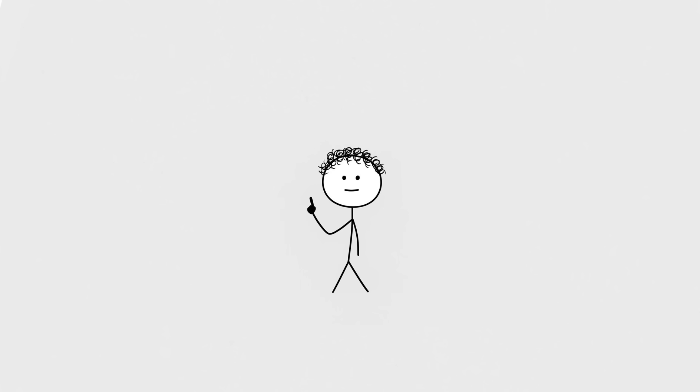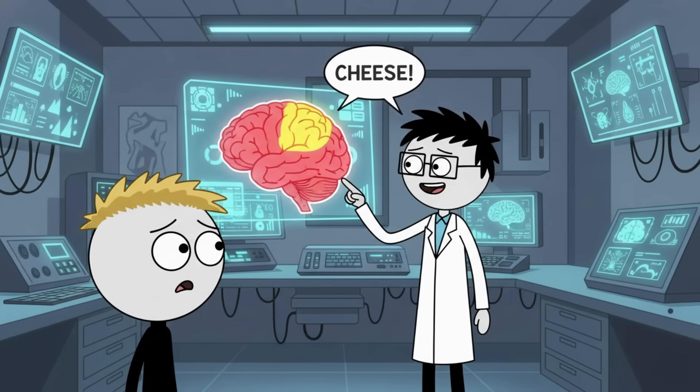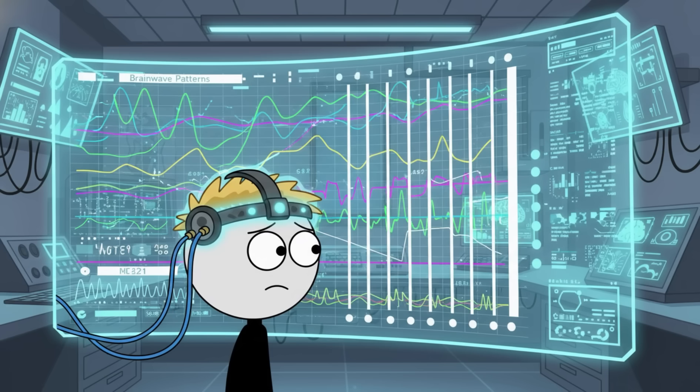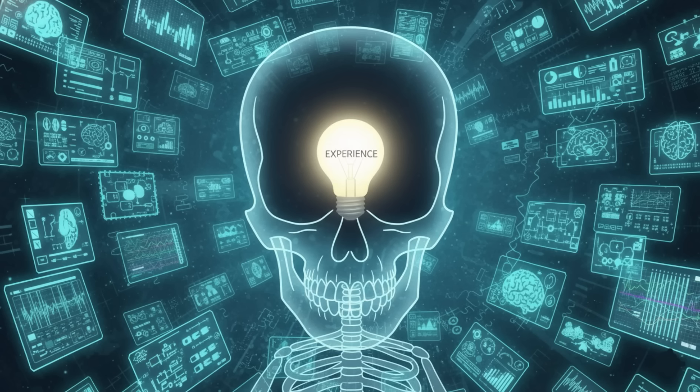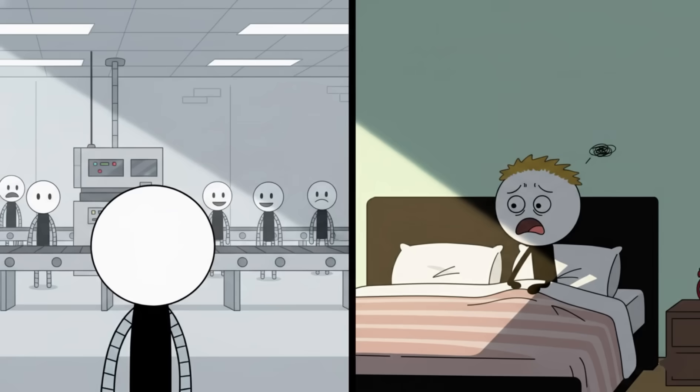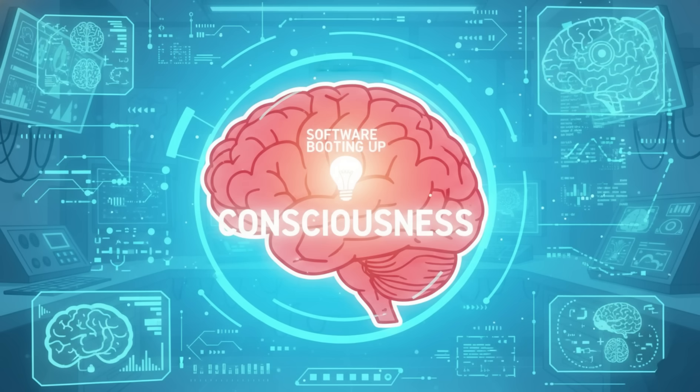Neuroscientists can point at brain regions and say look, this lights up when you think about cheese. They can slice brain waves into pretty graphs. They can even predict simple decisions milliseconds before you make them. But none of that explains why there's an experience happening inside your skull. Why aren't humans just complicated robots with zero inner monologue and no ability to cringe at themselves at 3 AM?